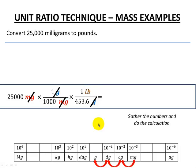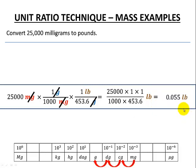Let's gather our numbers and do our calculation now. So 25,000 times 1 times 1 and 1,000 times 453.6. And there's our units, pounds. And our final overall answer to three decimal places, 0.055 pounds.